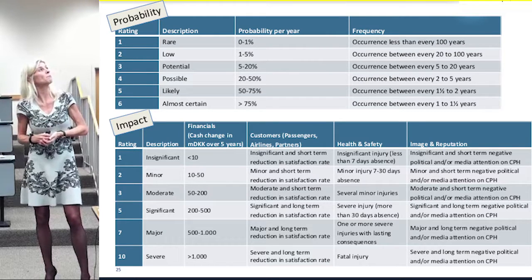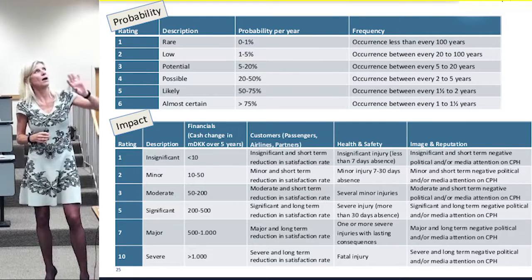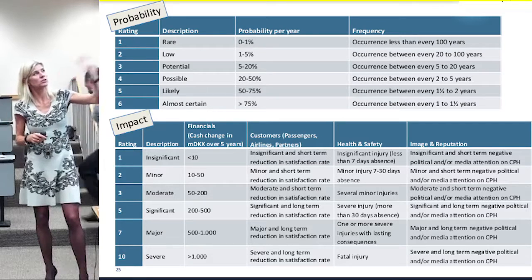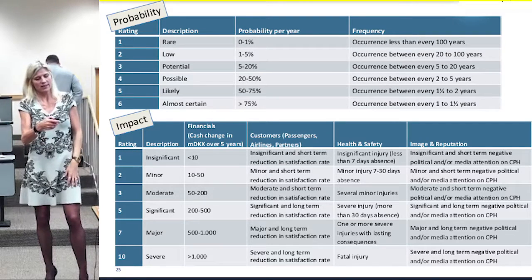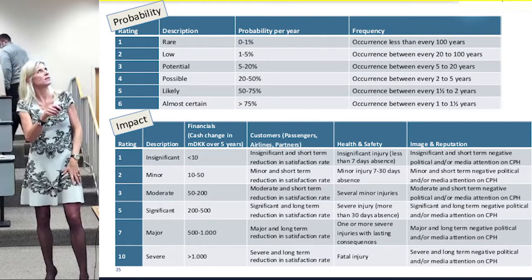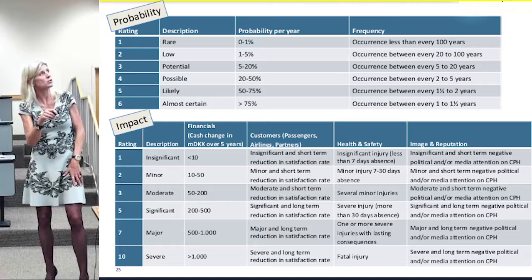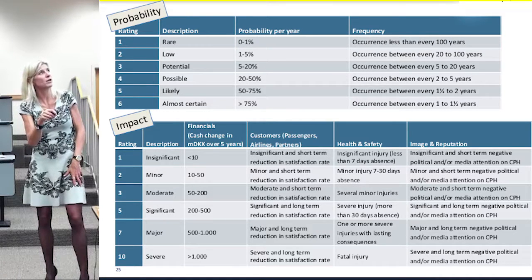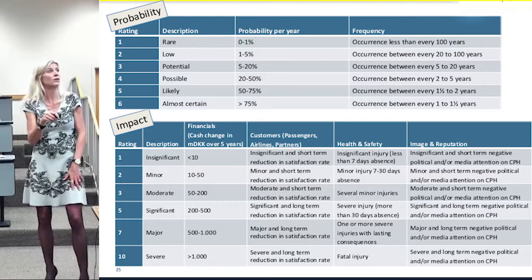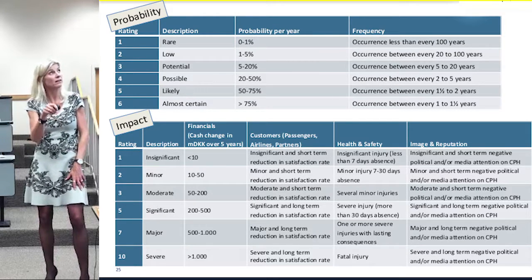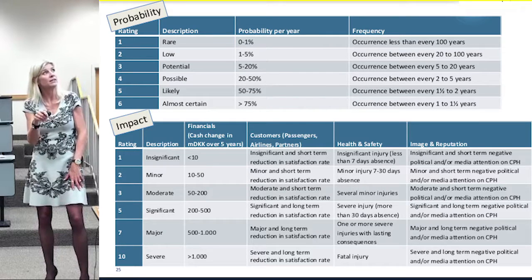I won't go into details with this, but it's just to let you know that the parameters we have for impact drivers here are the financial impact and the customers — covering both passengers and airline partners. Then if somebody could get injured or eventually die, that's what we try to measure here. And then the image and reputation in the precipitation period.